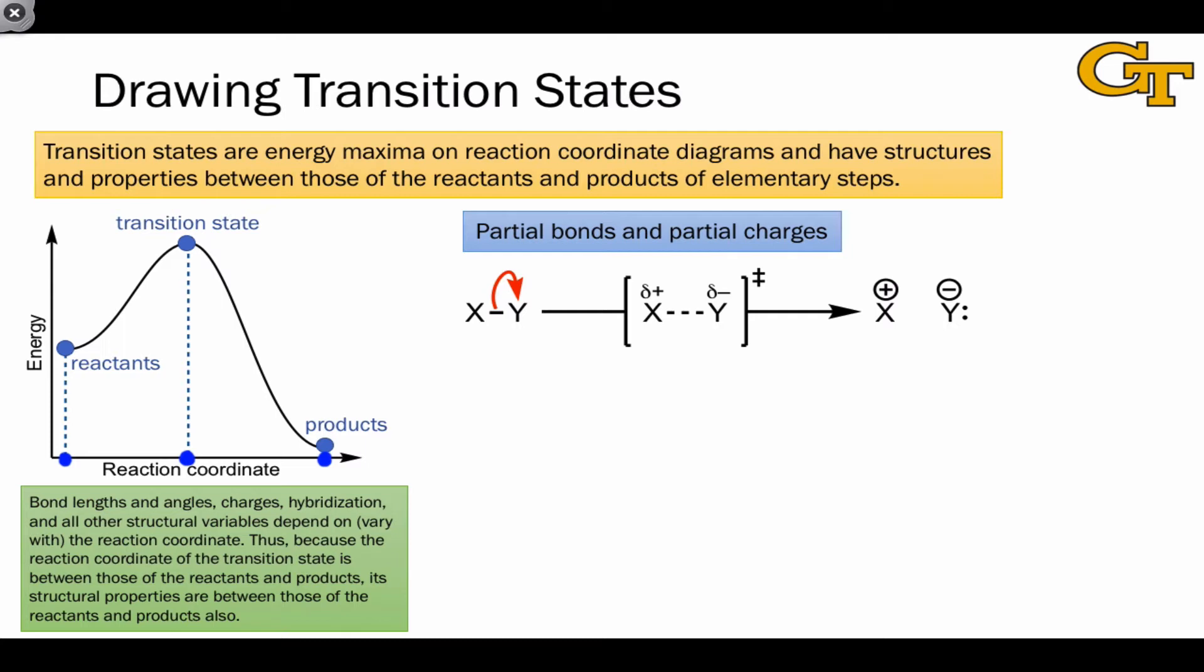Take a look at the example shown here, where the X-Y bond is breaking with the electrons headed towards Y. If we focus first on the formal charges, we see that X and Y go from being neutral in the reactant structure to X having a formal charge of plus 1, and Y having a formal charge of minus 1.